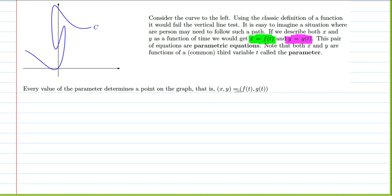To graph this, every value of the parameter determines an ordered pair x comma y. We put different t values into both x and y equations to get different ordered pairs.